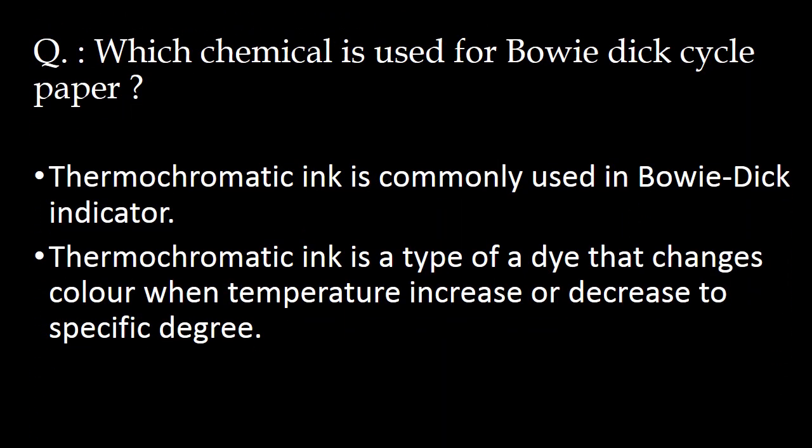The next important question: which chemical is used for the Bowie Dick cycle paper? Thermochromatic ink is commonly used in the Bowie Dick indicator. Thermochromatic ink is a type of dye that changes color when temperature increases or decreases to a specific degree.